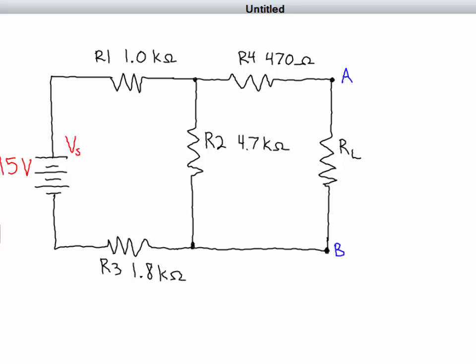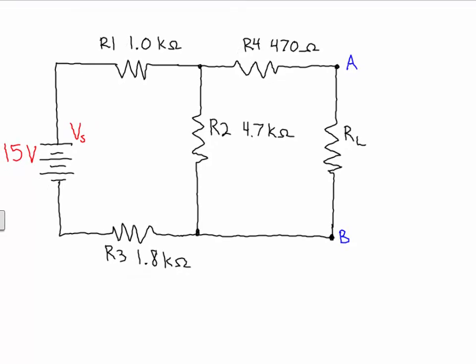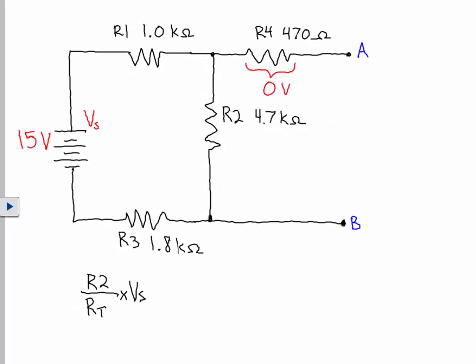To calculate that, we need to know what proportion of the total voltage, or 15 volts, is dropped on resistor 2. To do that calculation, we need to know how much of the resistance resistor 2 is compared to the total resistance. We take resistor 2 divided by the total resistance and then times that by the voltage source. The voltage drop from A to B, or across the output terminals, would be the same as the voltage drop across resistor 2 because they're in parallel.